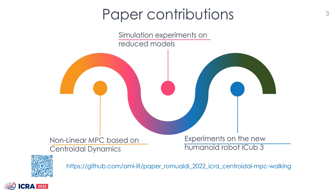Results show that the proposed controller generalizes on the number of contacts. Finally, we embed the controller in a three-layer locomotion architecture and validate it on the humanoid robot ICAB. The paper code is publicly available on GitHub.